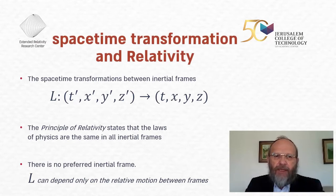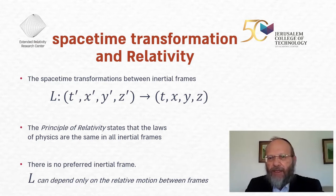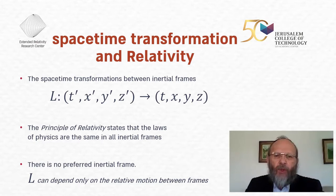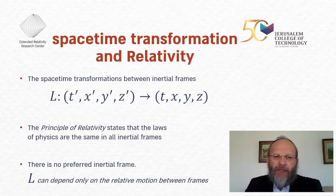We are talking about space-time transformations between inertial systems. The laws of physics are based on the relativity principle, which tells us that laws are the same in all inertial systems. In order to use this, we have to know how we transform in space-time from one inertial system to another — specifically, the space-time transformation between inertial frames, measuring events by their time and position. The transformation translates measurements from the primed system to the unprimed one.